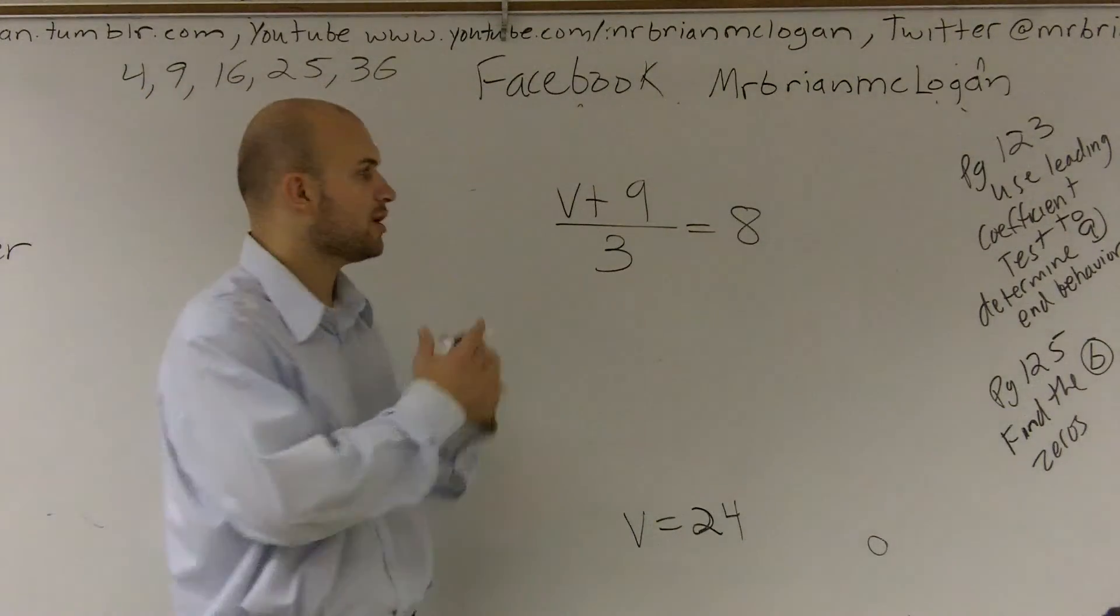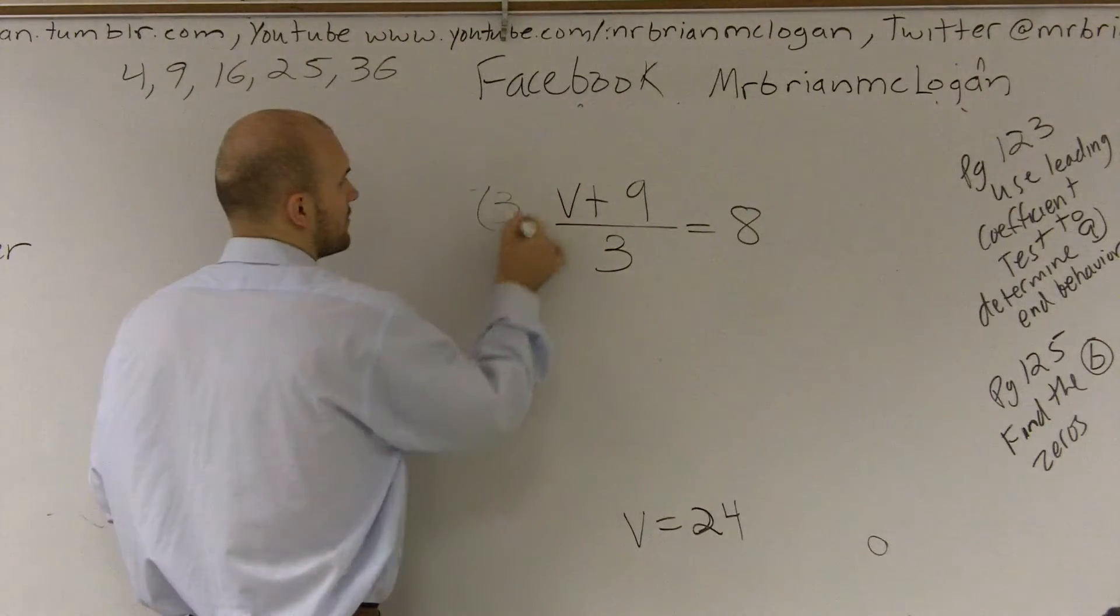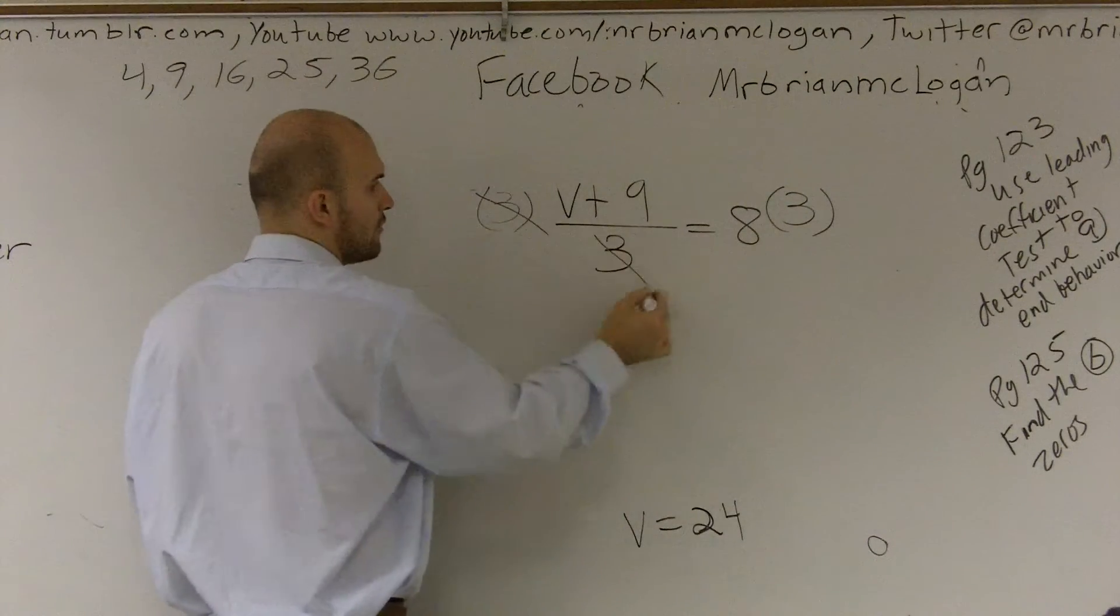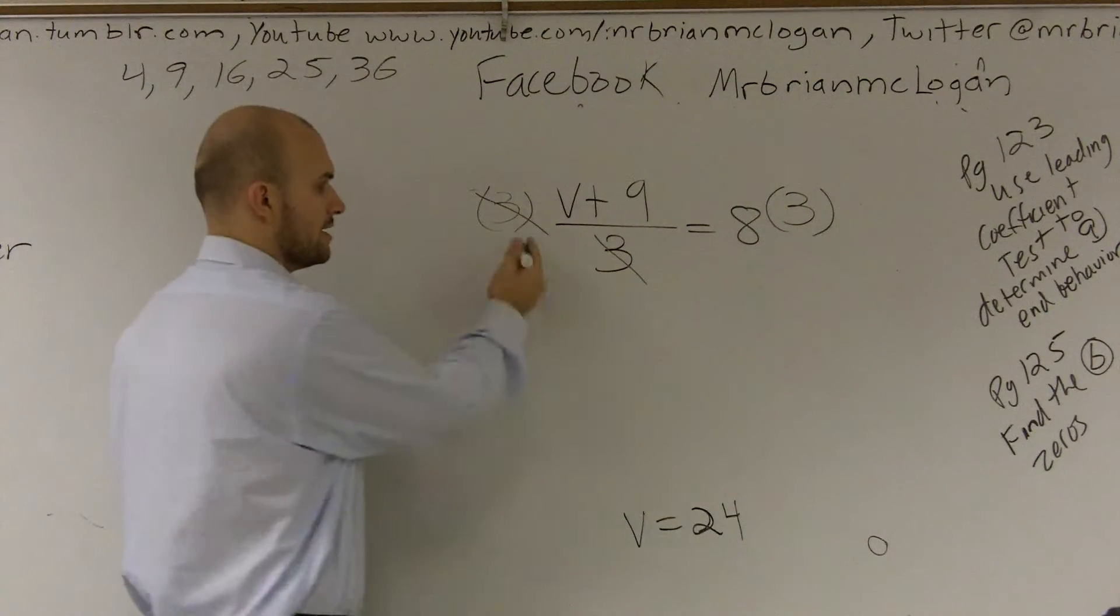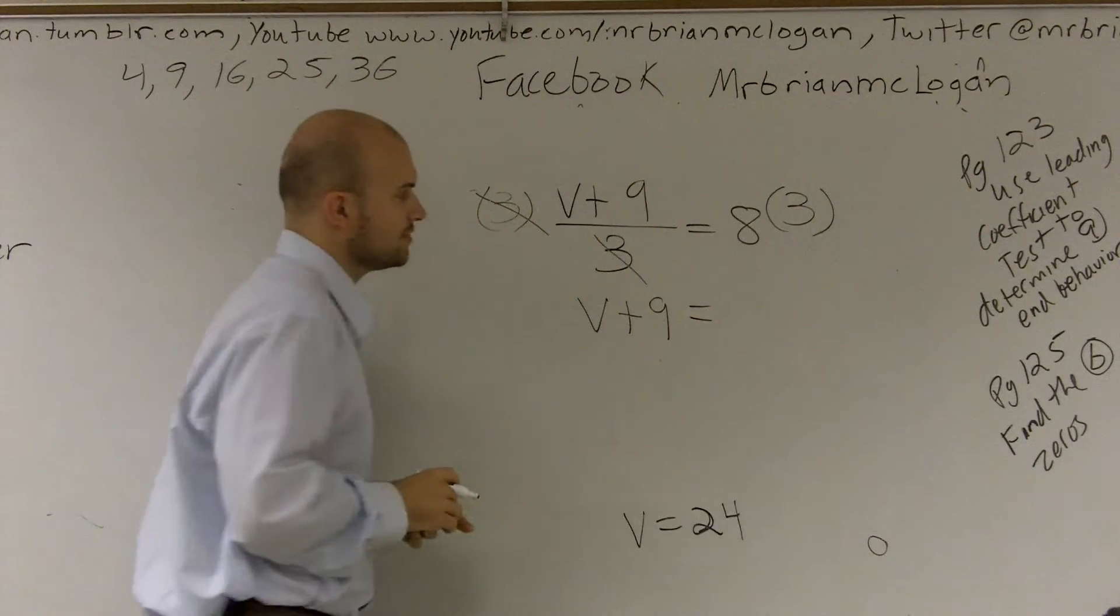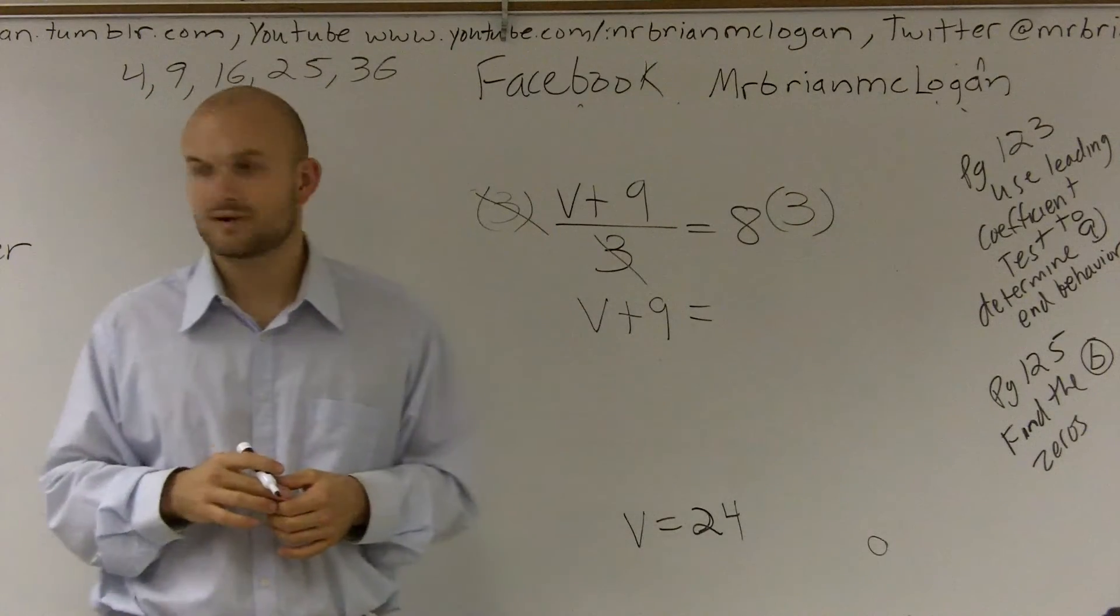We get rid of fractions by multiplying by what's on the denominator. So if I multiply by what's on the denominator as a numerator, what's going to happen is 3 over 3 is going to cancel out to become 1. So I'm just left with v plus 9 equals 8 times 3, which is going to be 24.